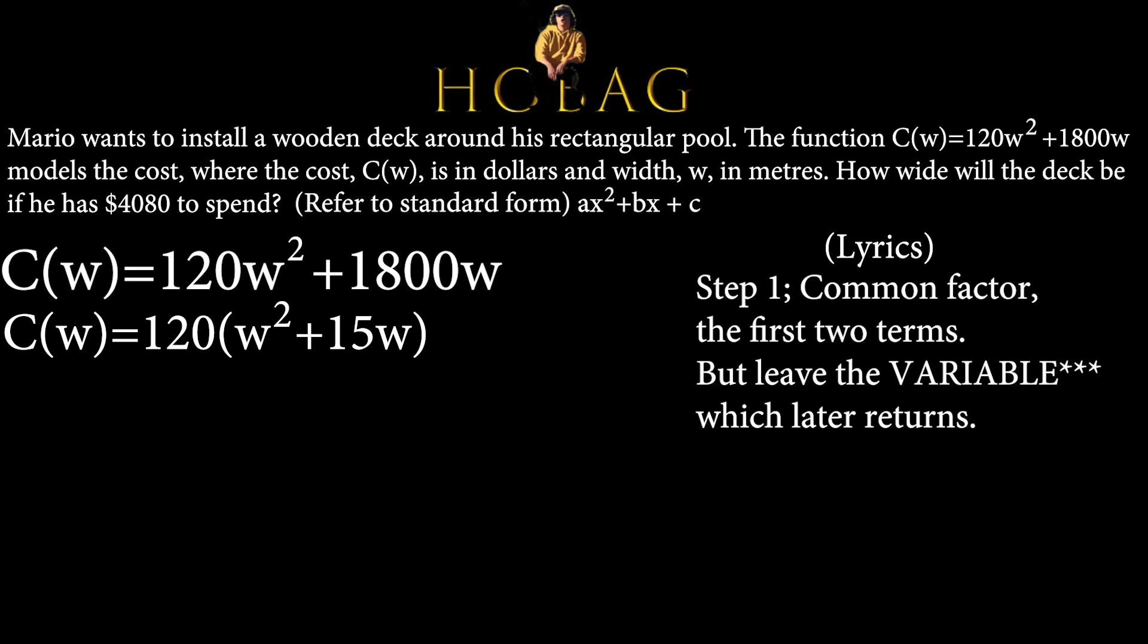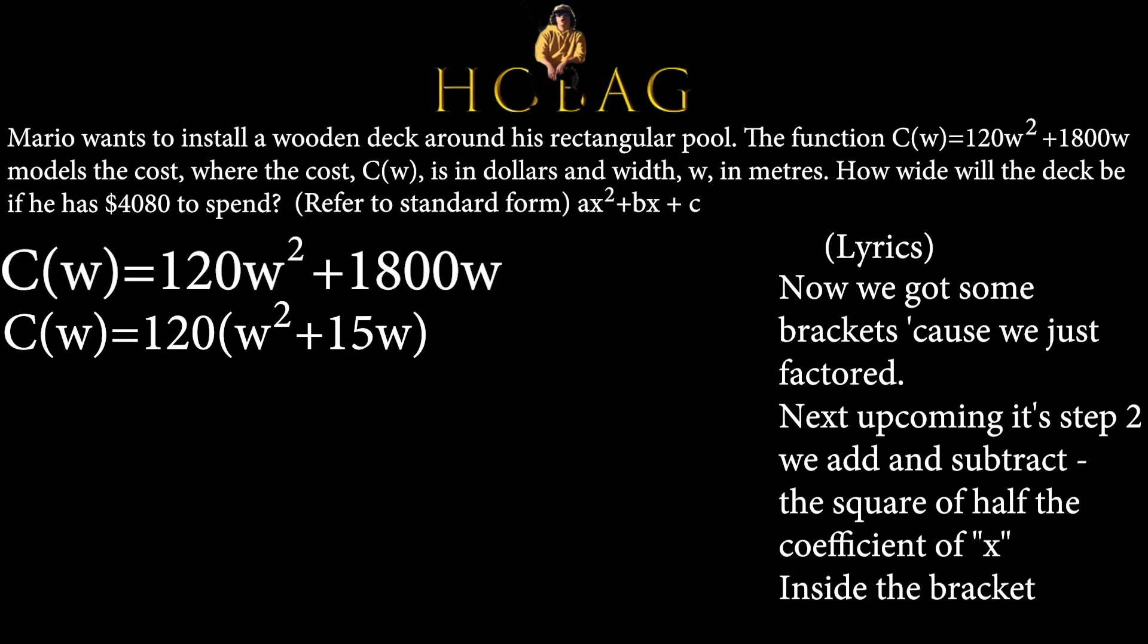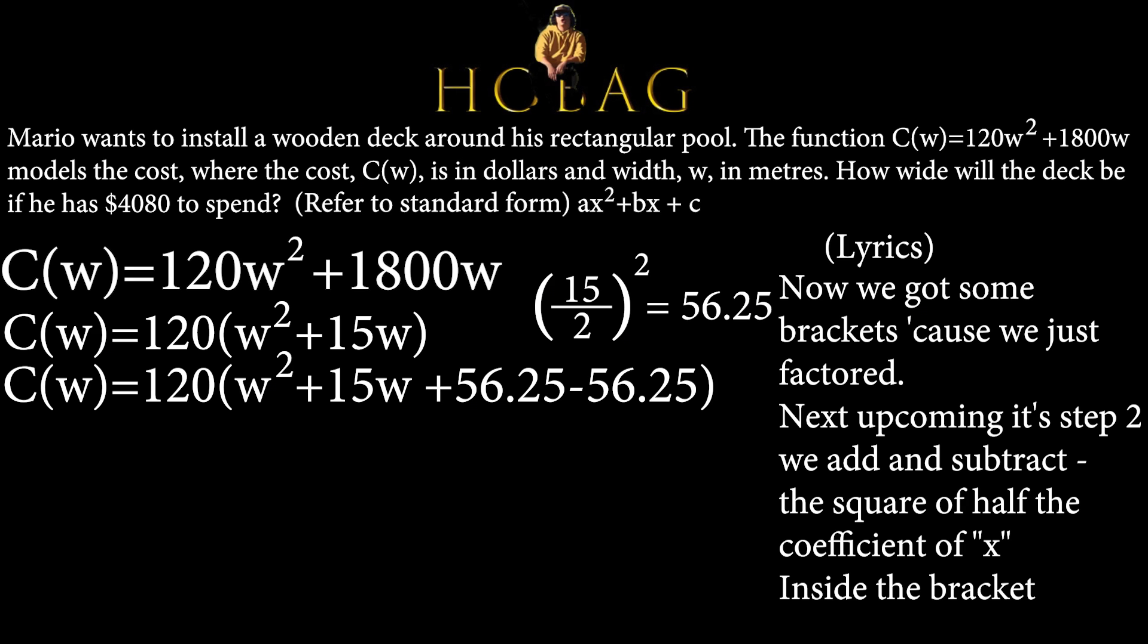Step 1, common factor the first two terms, but leave the coefficient which laid the returns. Now we got some brackets cause we just factored. Next upcoming is step 2, we add and subtract the square of half the coefficient of x inside the bracket.